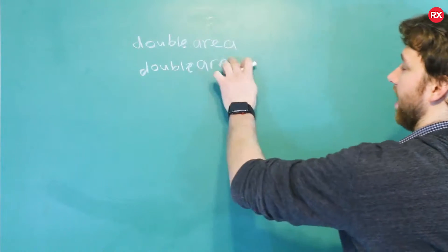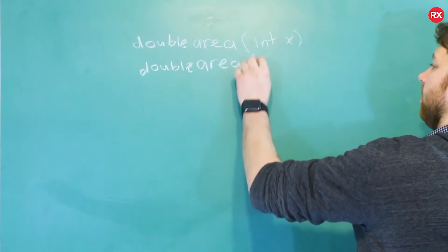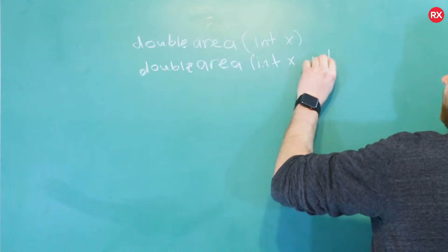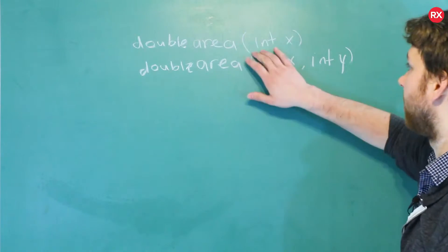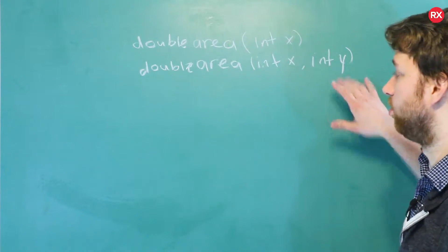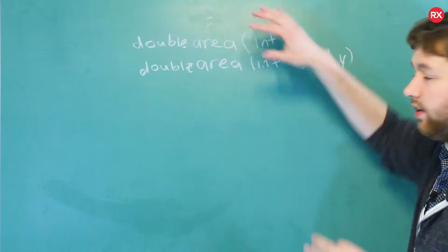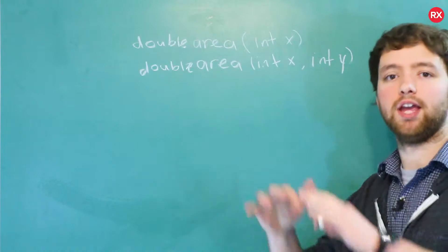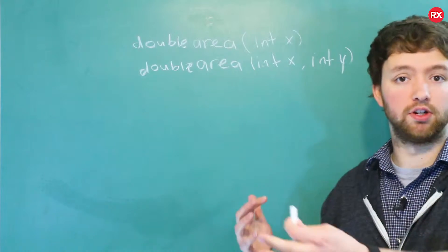So the example I gave earlier is we have an area function. One takes an integer x and the other one takes an integer x and an integer y. Can name them whatever you want. It doesn't really matter. The point is this one takes one argument. This one takes two. Or you could do the same thing where you take doubles. And that's fine. In fact, the double one would still be able to take an integer value because an integer can easily be converted to a double.